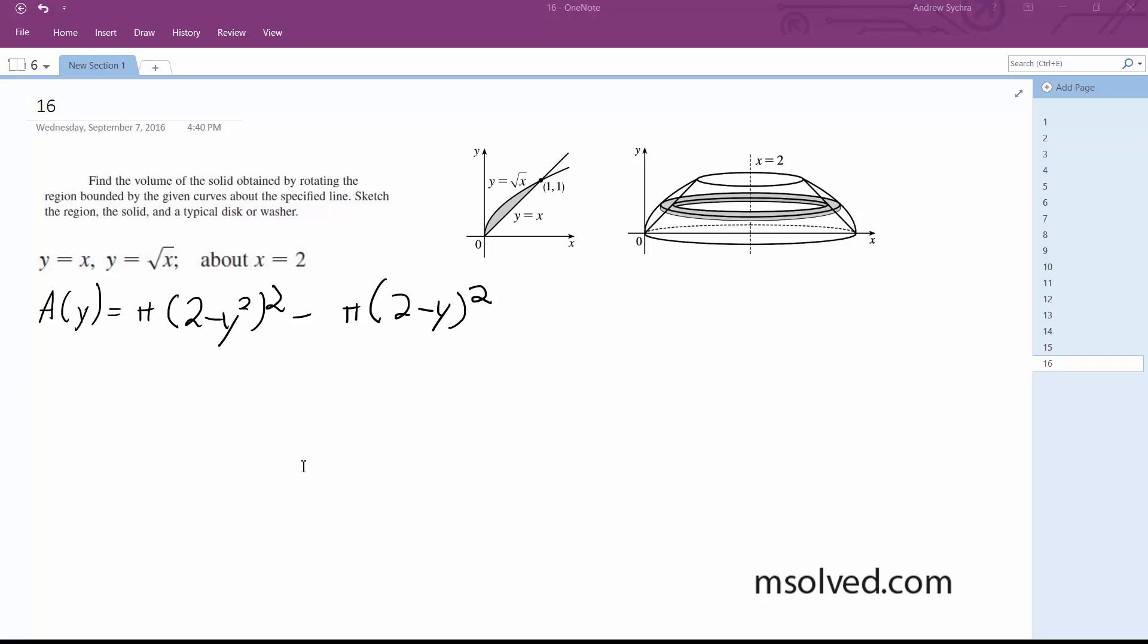Okay, so integrating this now. So pulling out the constant pi, so we're integrating this from 0 to 1. And I multiplied out for both of these.